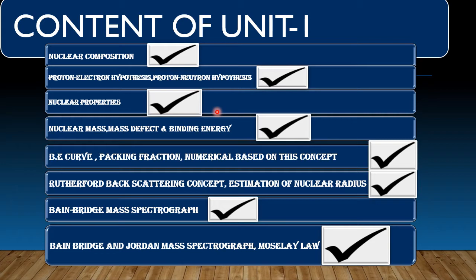Properties like quadrupole moment, angular momentum, and statistics — these can carry high marks, meaning 5 to 6 mark questions. Then there will be numericals. Then comes nuclear mass, mass defect, and binding energy. Binding energy is the most important part of your unit. You can check the exam and see the binding energy questions.